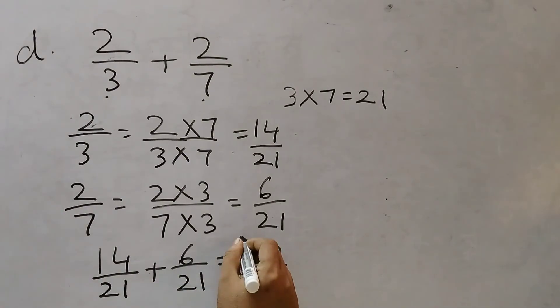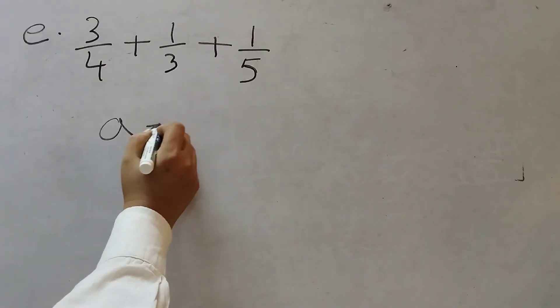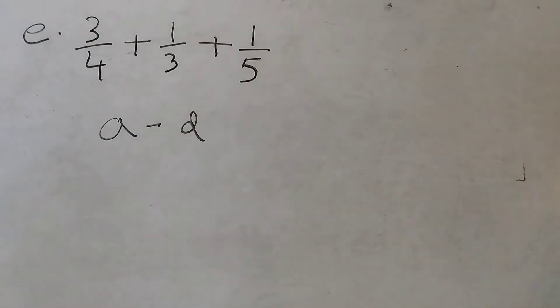Now this is a proper fraction and we can leave the answer as it is. So the final result is 20 by 21. So now we have completed the questions from A to D. Question number E onwards we will solve in our next video. Hope this is helpful to you. Thank you.